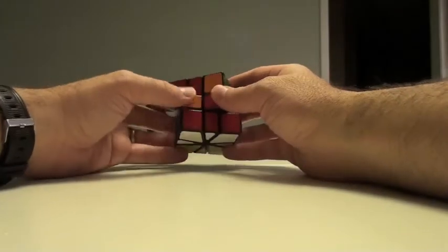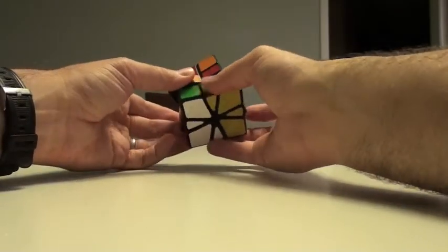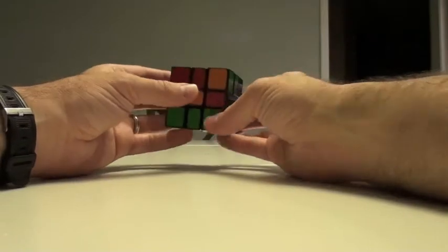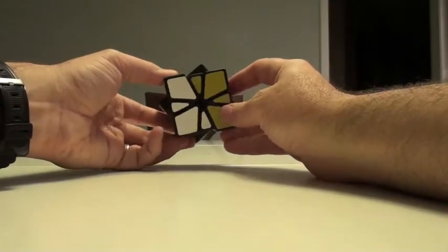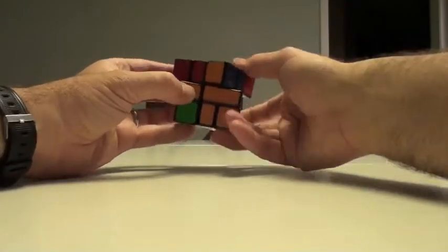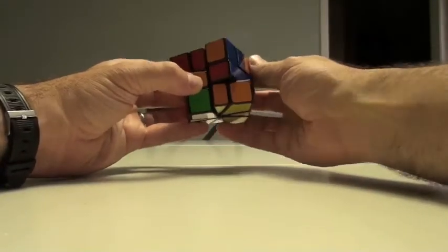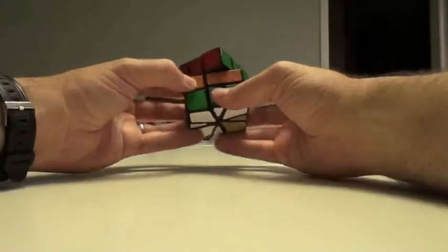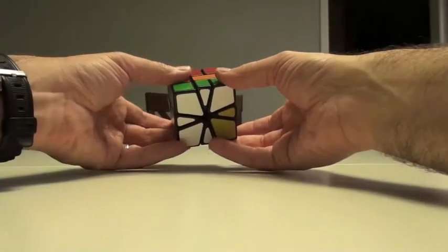It's going to create parity in the middle—doesn't matter, we'll just move it across here. Now I'm going to be looking for the other white and green, which is over here. So 2R U 2R U' 2R, so there that is. I'll also move that back here.